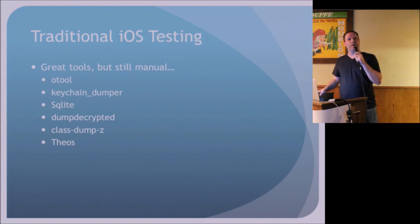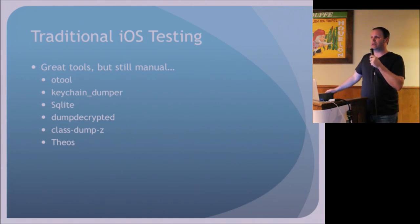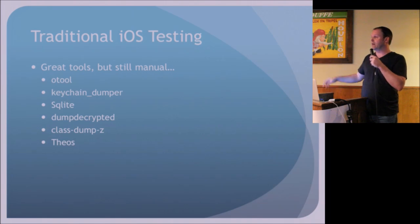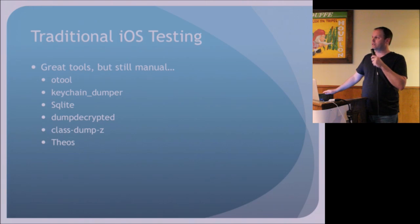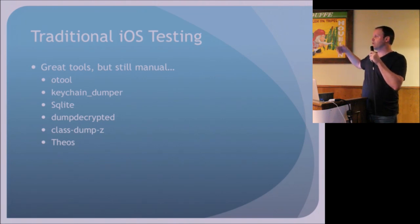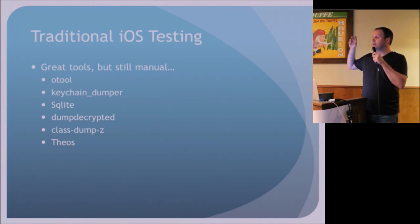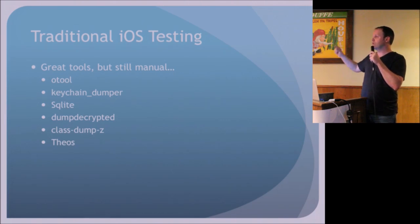The second-to-last tool is class-dump-c. After we decrypt the binary, we can start dumping the class information — we can identify classes and methods contained within the binary. It's almost like doing a high-level reverse engineer. We can also dump the headers, which separates all of those classes out into individual files, and we can start looking through those individual files and methods that may be interesting.